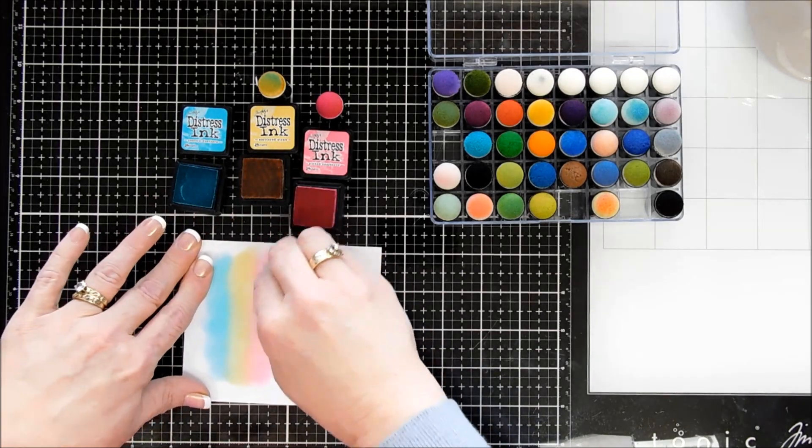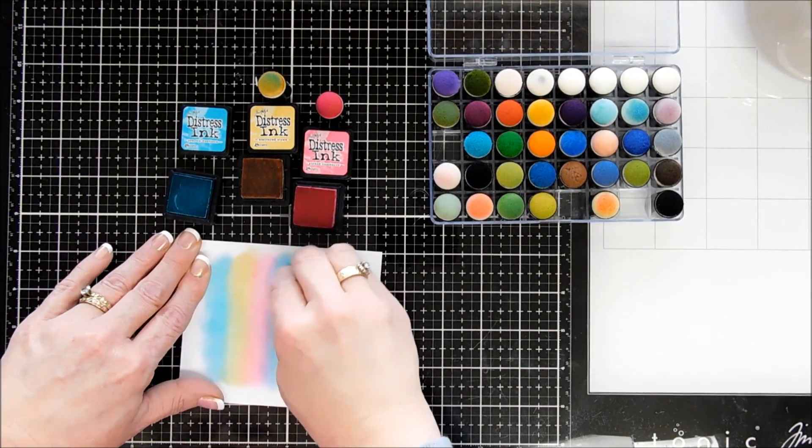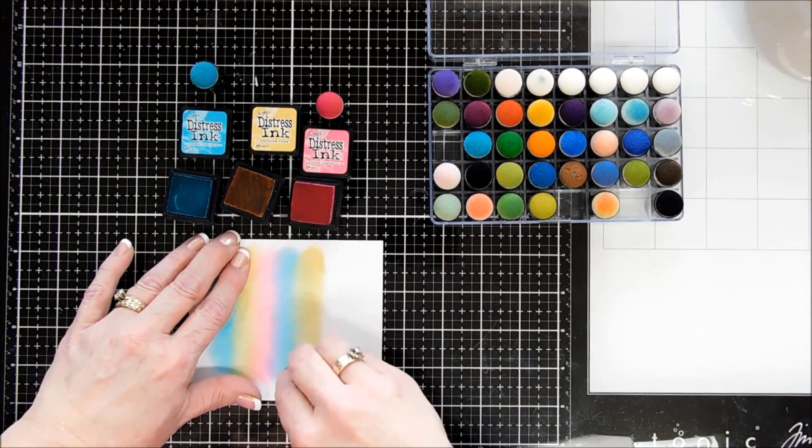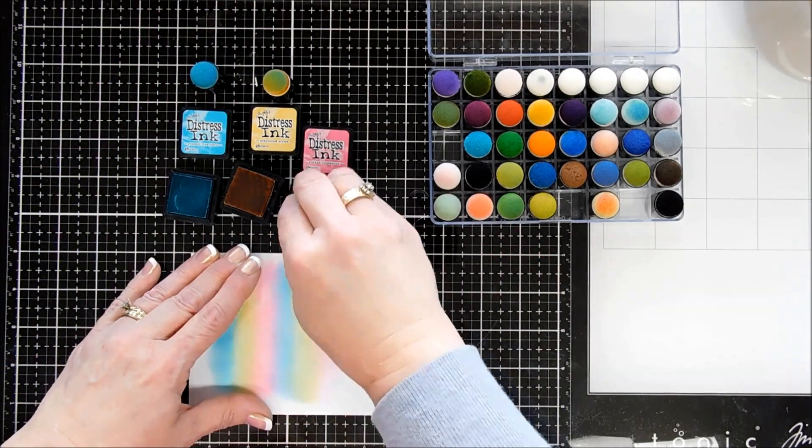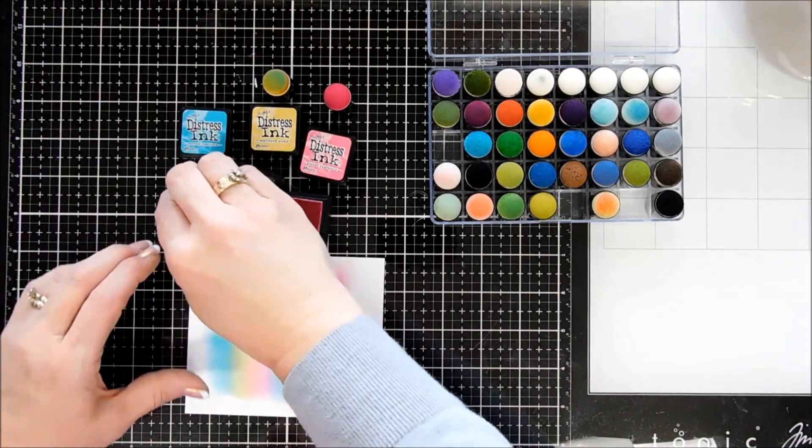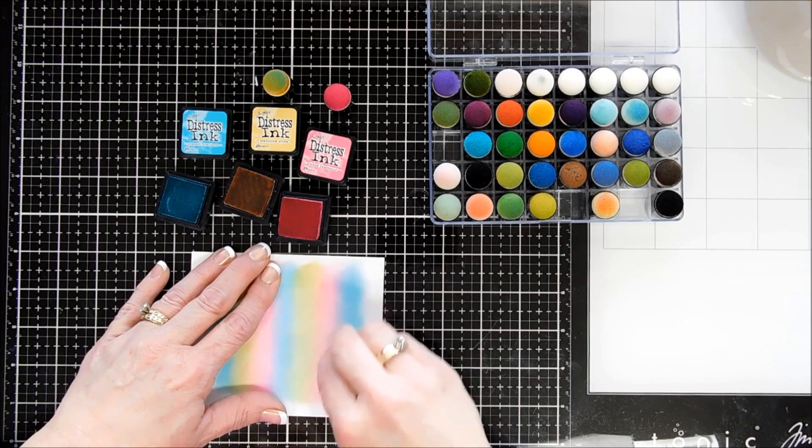If you mix the blue with the yellow, of course you get green. If you mix the yellow with the pink, you get an orangey, corally color. And if you mix the blue with the pink, you also get a real pretty purple. So I'm just repeating the pattern. I'm actually doing my ink blending on some Strathmore Bristol Smooth card stock. And I'm just creating a nice little bright and vibrant background.